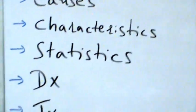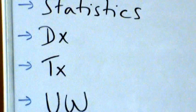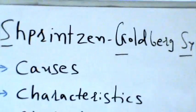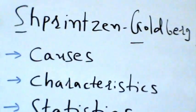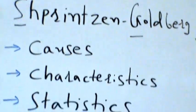We'll also cover statistics, diagnosis, treatment, and underwriting. SGS is a connective tissue disorder that affects many parts of the body.